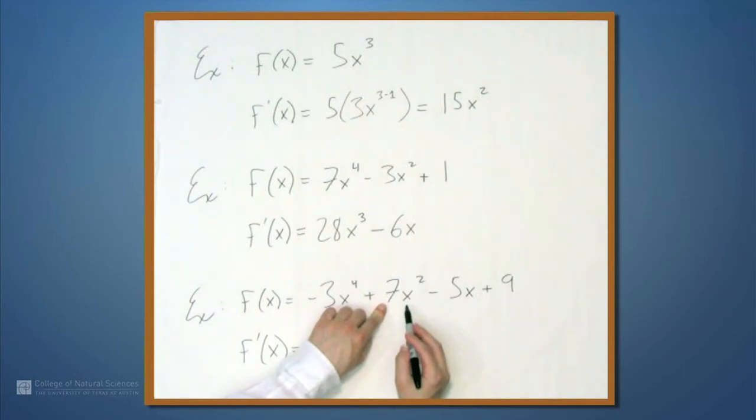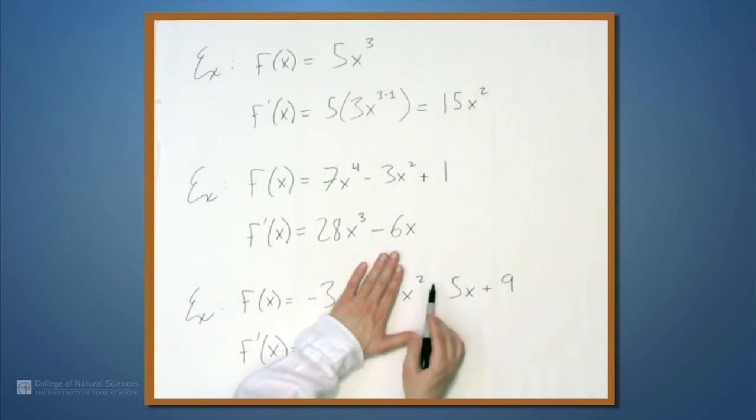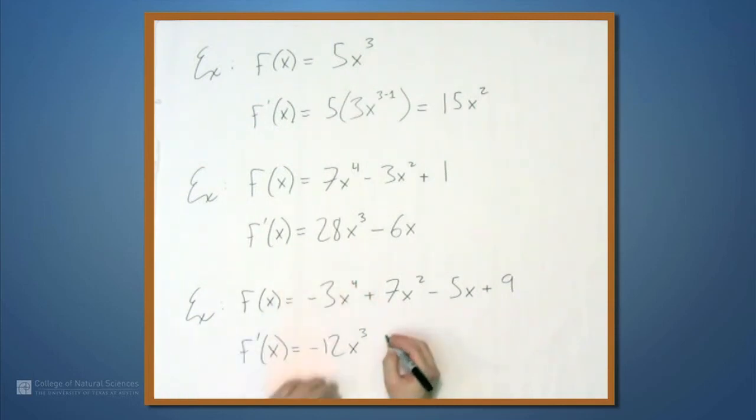What about the derivative of 7x squared? So forget about the 7 for the moment. x squared, the 2 comes out front. We get 2x to the 2 minus 1, which is just 2x. So when we have the 7, we get 7 times 2, which is 14, times x to the 1st power. Right? This 2 minus 1 is just 1.